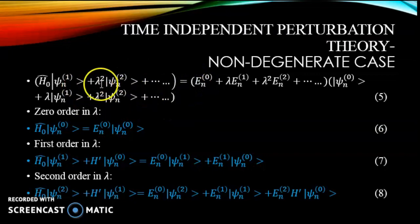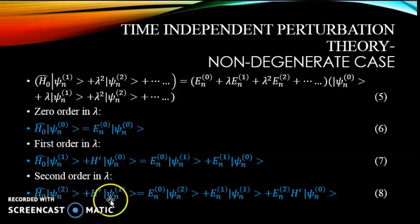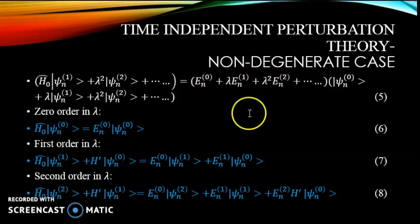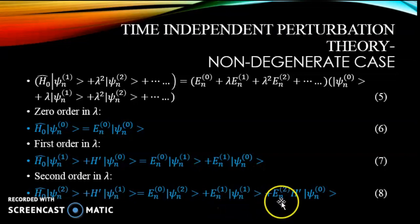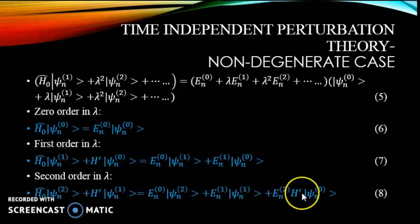For the second-order term in lambda, the coefficient of lambda squared on the left-hand side is H0 psi_n2 + H' psi_n1, and this equals the right-hand side coefficient: E_n0 psi_n2 + E_n1 psi_n1 + E_n2 psi_n0. Note: an extra H' appearing in the original is a mistake, please ignore it.